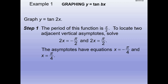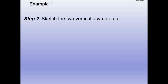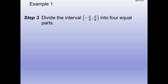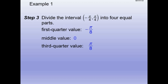Take the argument (2x), set it equal to -pi/2 and +pi/2, and solve for x. That gives us asymptotes at -pi/4 and pi/4. Now divide that interval into four equal parts. The midpoint: (-pi/4 + pi/4)/2 = 0. The quarter point: (-pi/4 + 0)/2 = -pi/8. The three-quarter point: (0 + pi/4)/2 = pi/8.